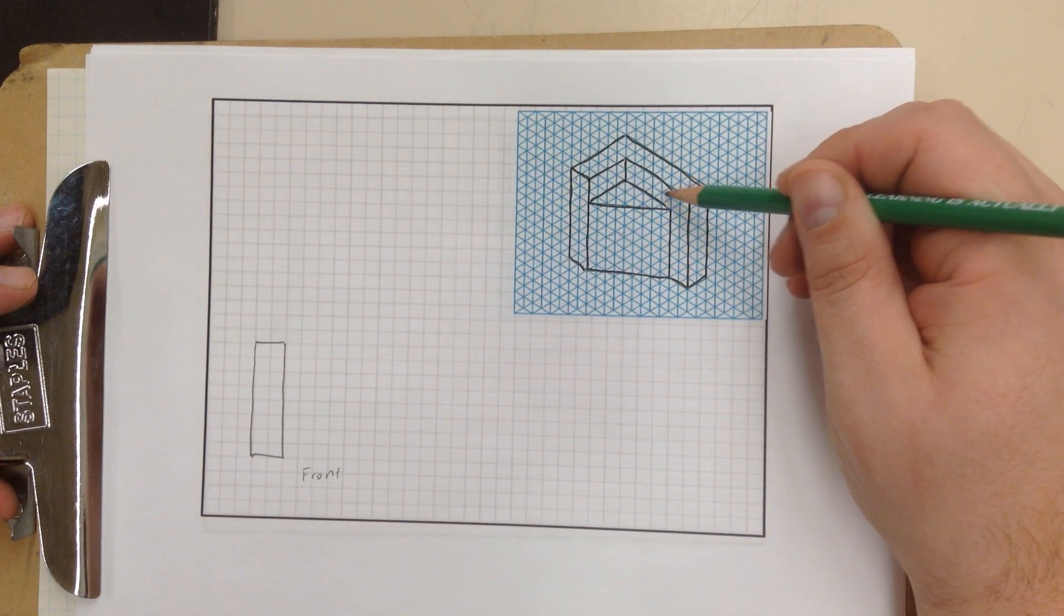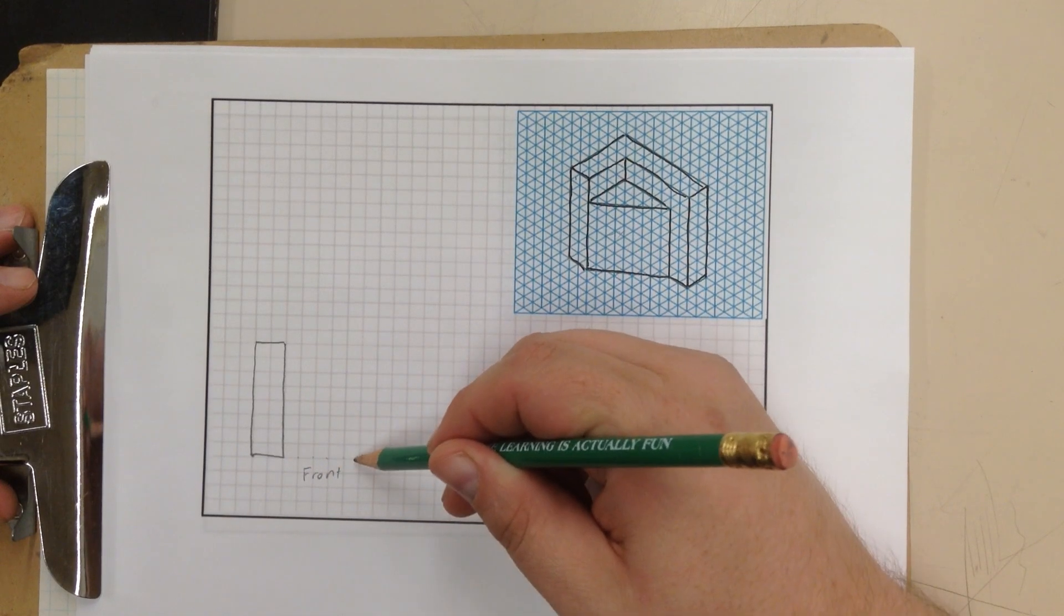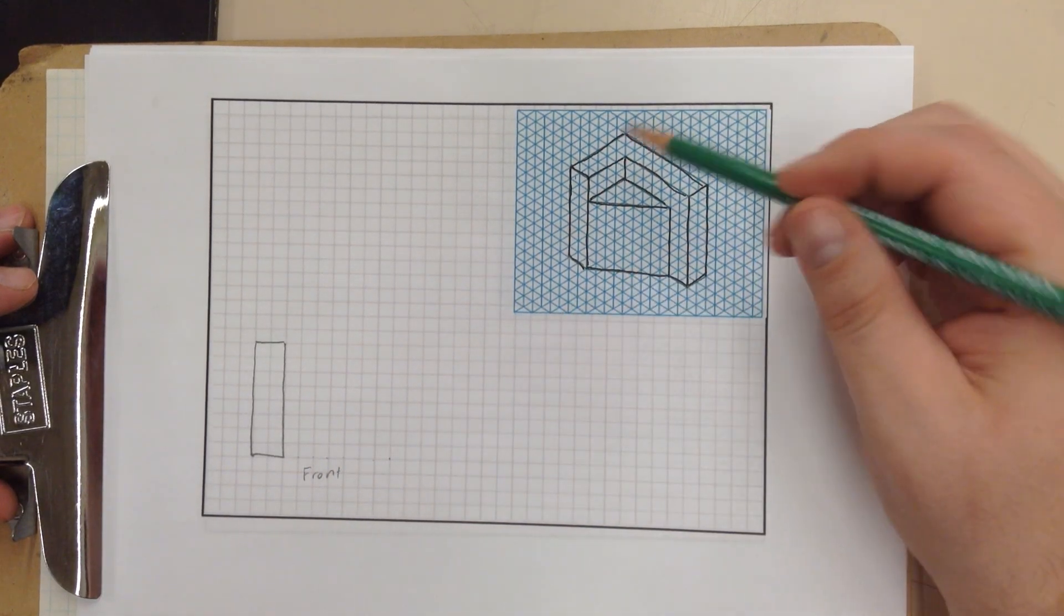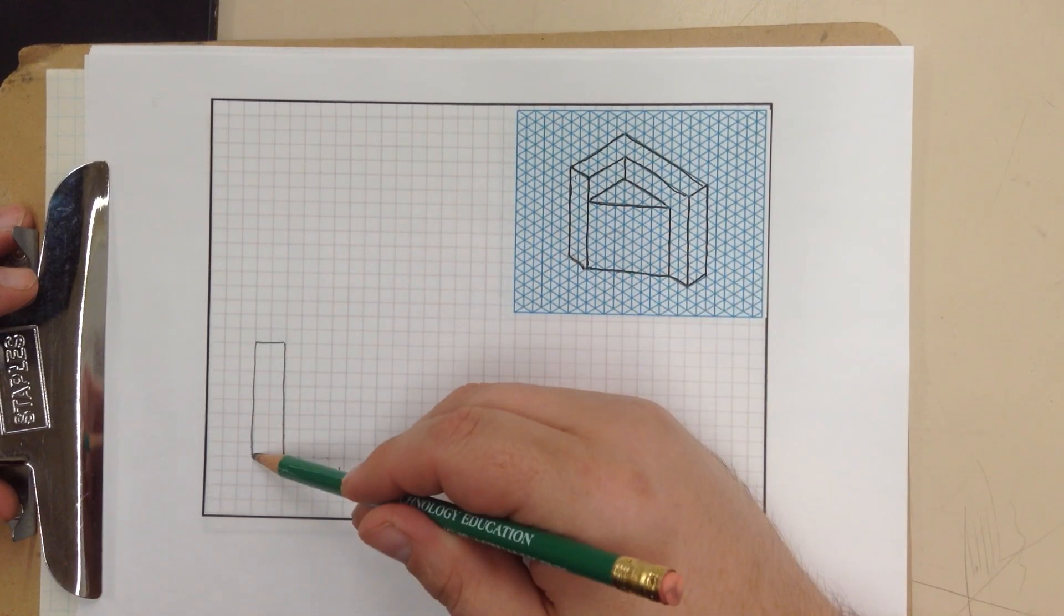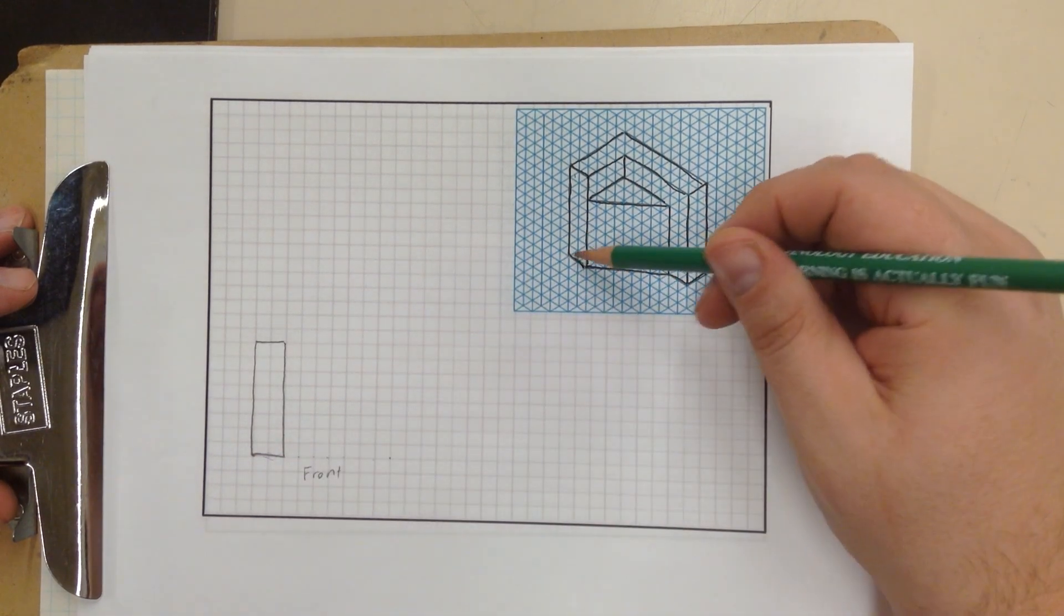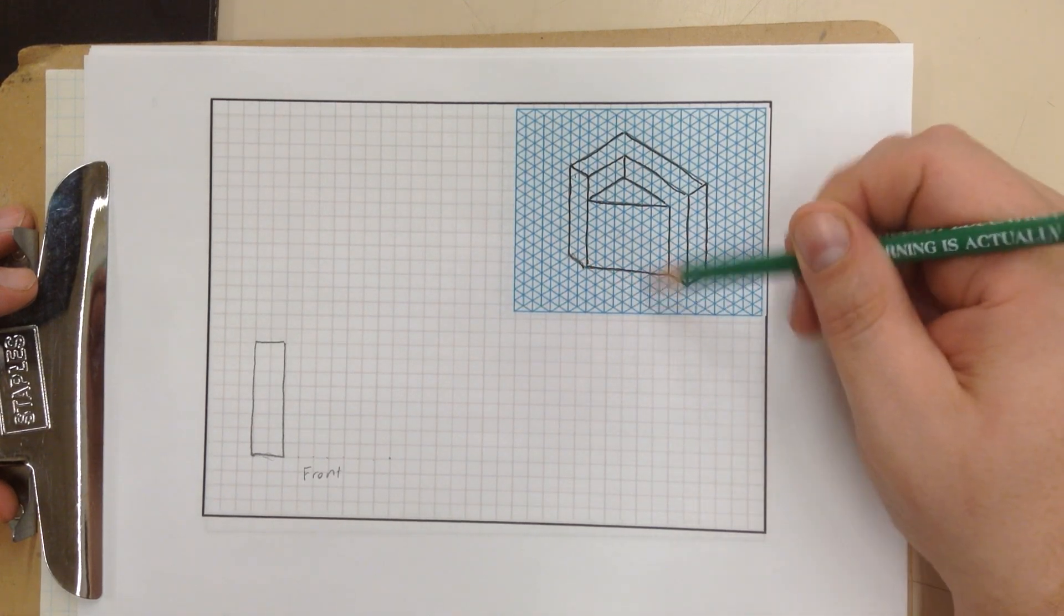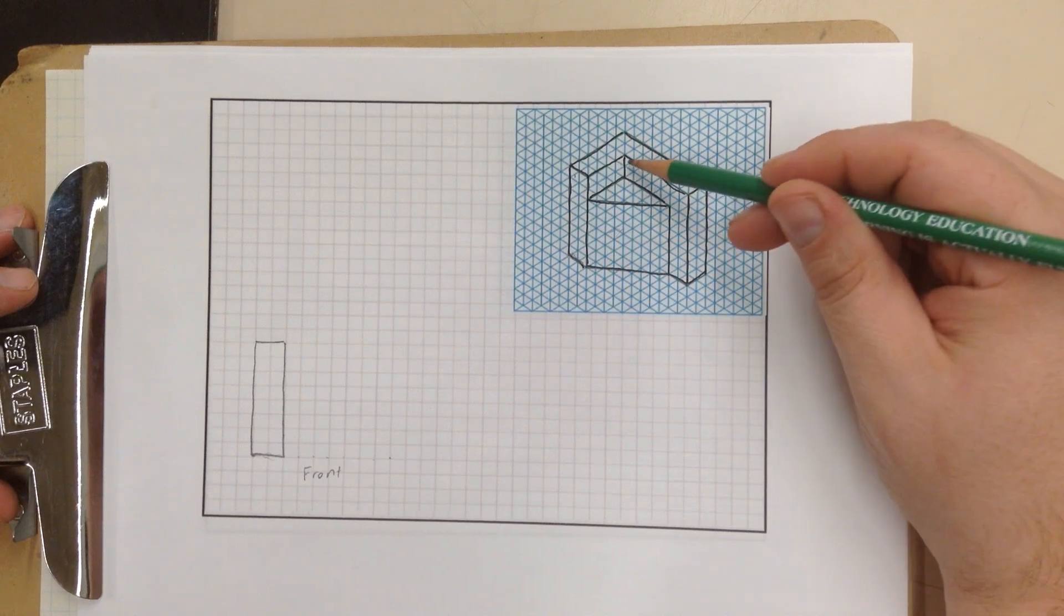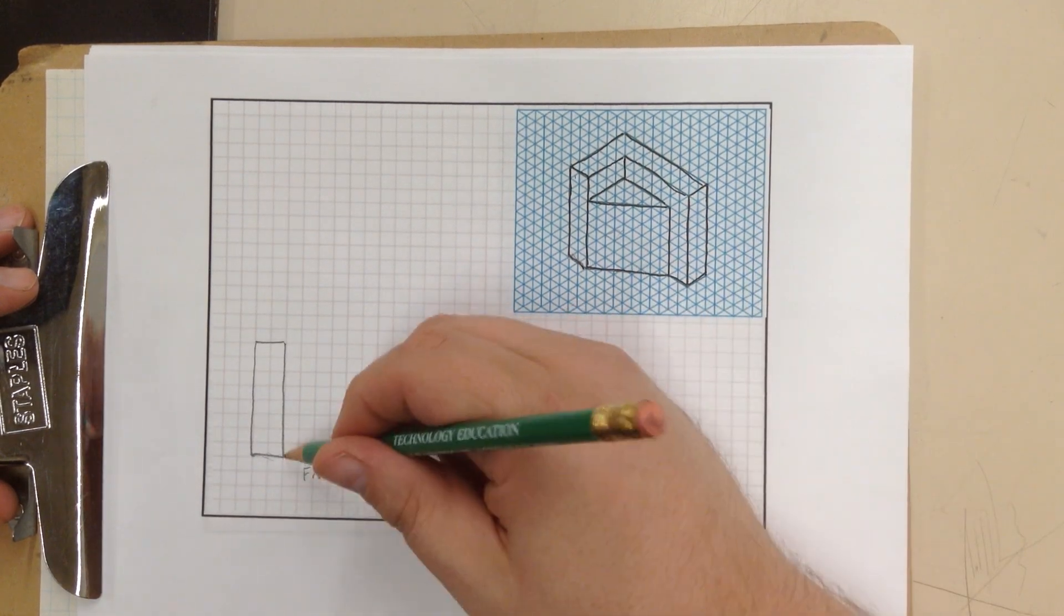And I'm going to count the squares over. So it's 1, 2, 3, 4, 5, 6, 7 over. 1, 2, 3, 4, 5, 6, 7 over. So again, this piece right here is this piece. And this length is also this length. So I'm going to count. 1, 2, 3, 4, 5, 6, 7. 7 over.